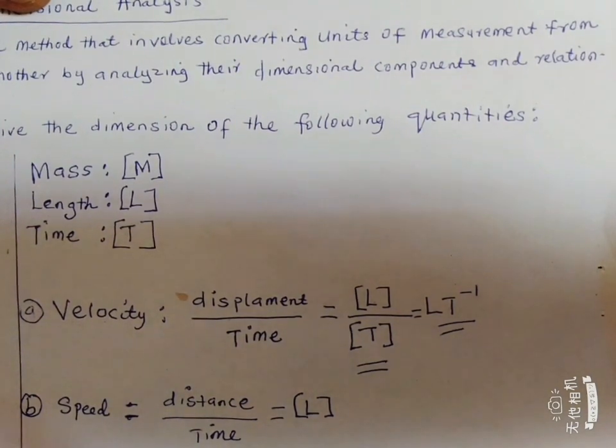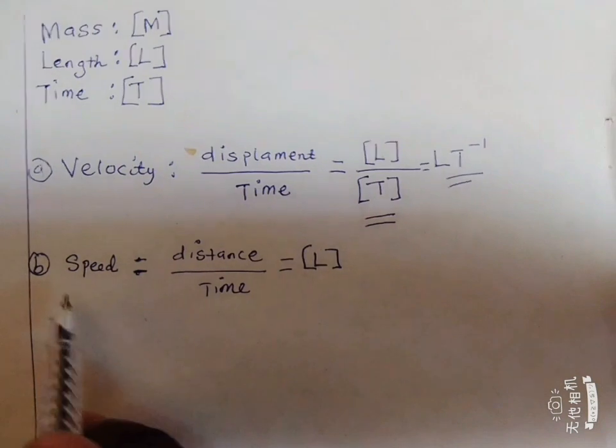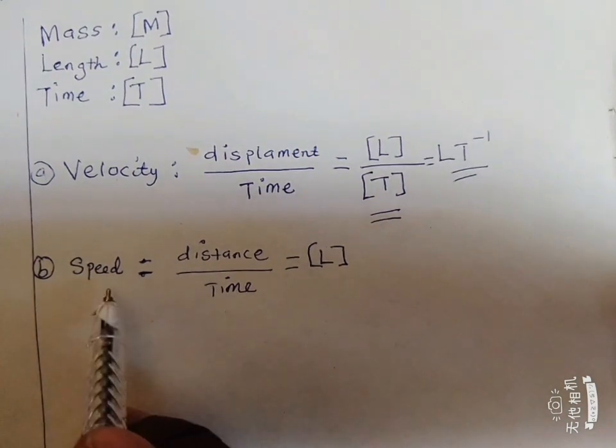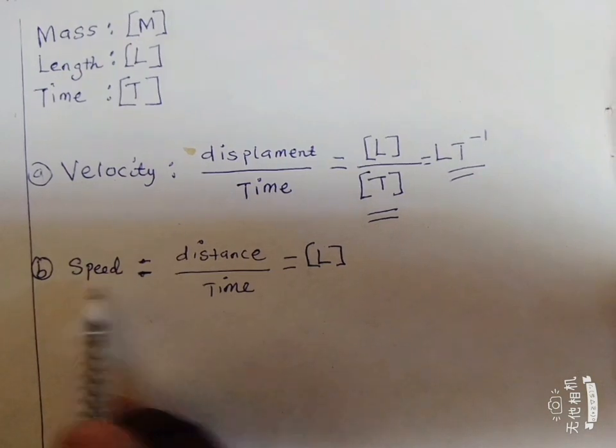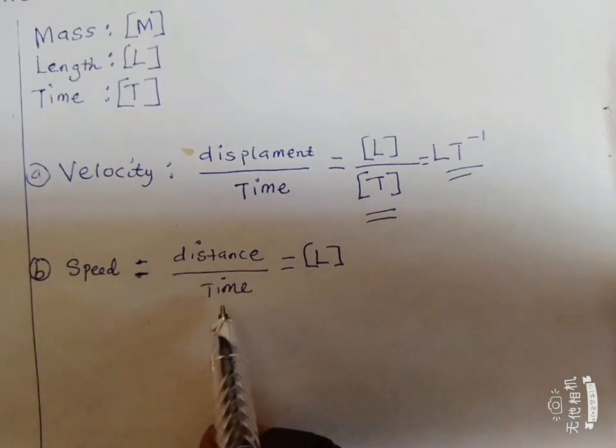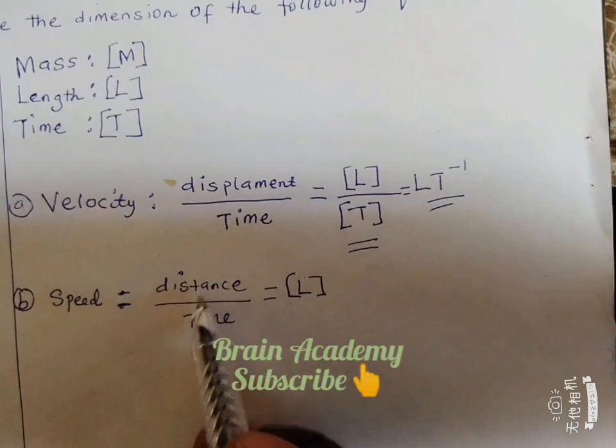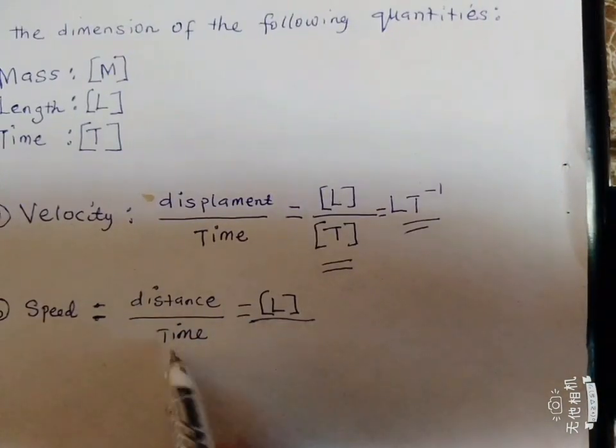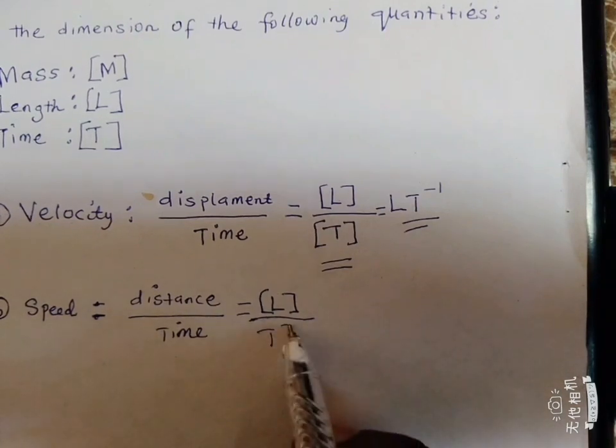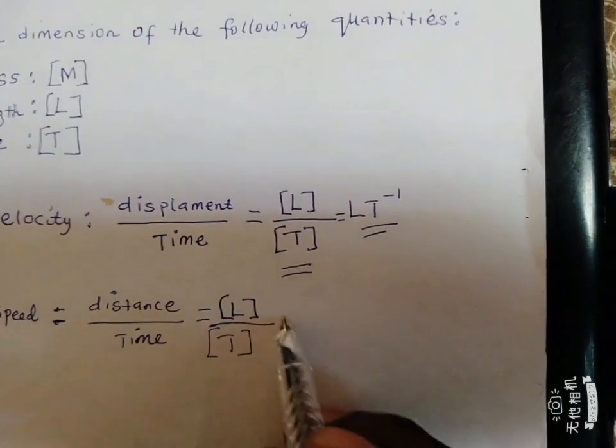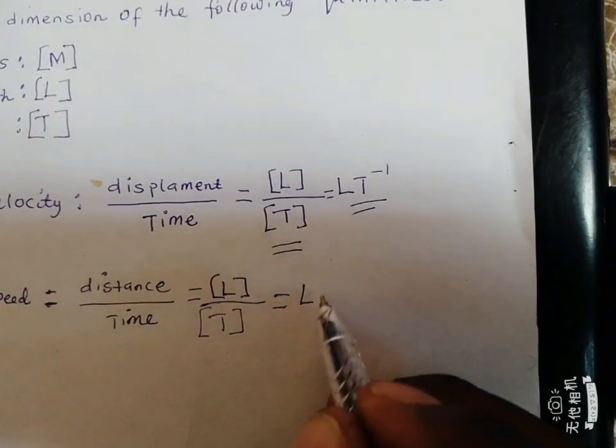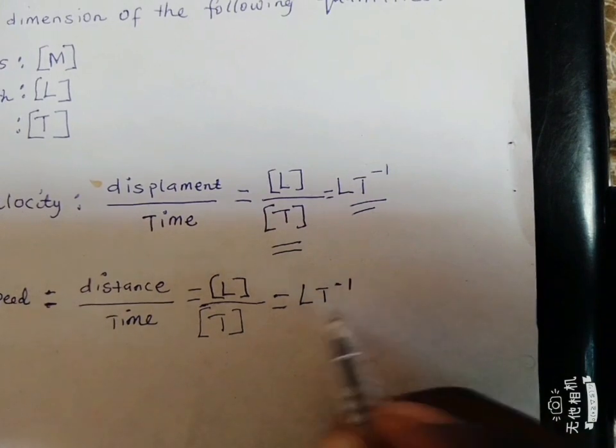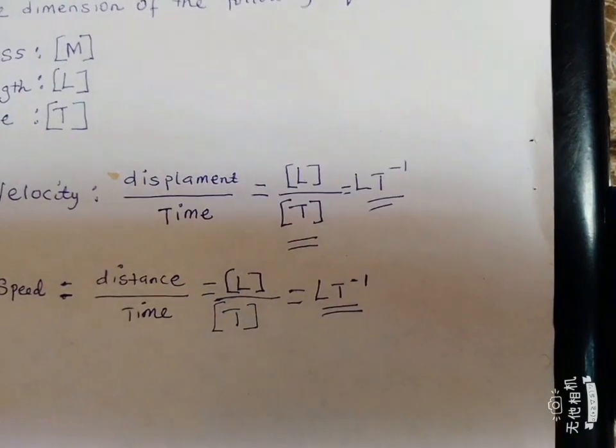So we look at the B part of it, trying to get the dimension of speed. We know that speed can be defined as the rate of change of distance with respect to time. That is, speed equals distance over time. And distance is measured in meter, which is the length. Then divided by time, T, capital T. So which at the end of the day we have it as length per time. So this becomes the dimension of speed.